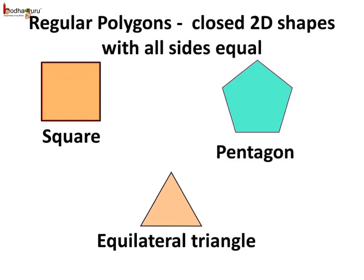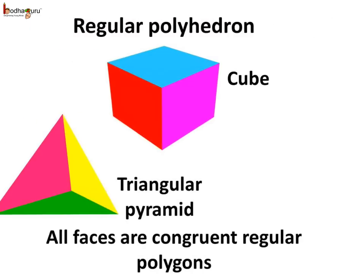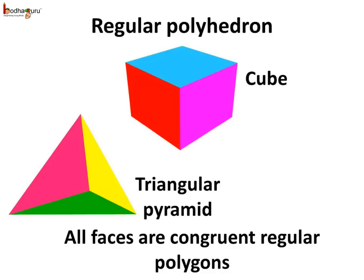If you remember, the regular polygons are the 2D shapes which are closed figures with all sides equal — so the square with all 4 sides equal, the equilateral triangle with 3 sides equal, etc. So we can say the polyhedra like the cube or this triangular pyramid, where all the faces are congruent regular polygons — that is, polygons with equal sides — are called regular polyhedra. A regular polyhedron has all faces which are congruent regular polygons.